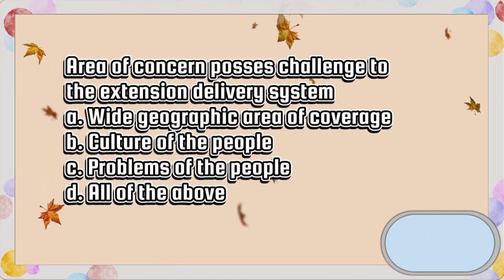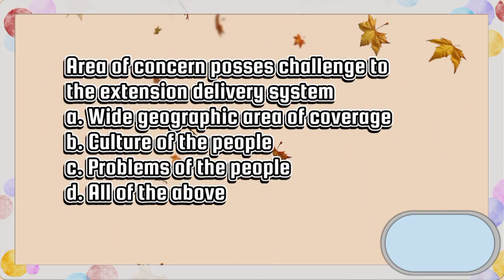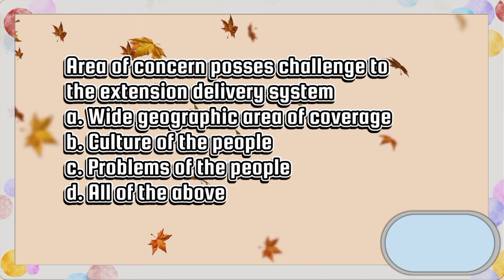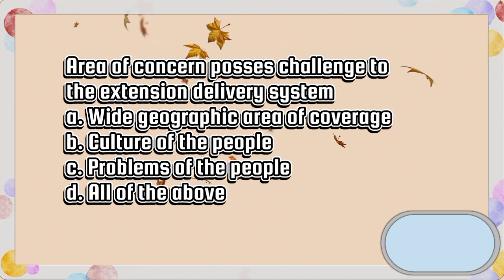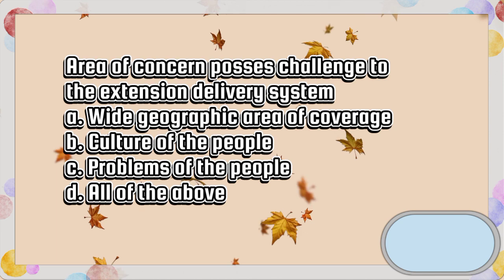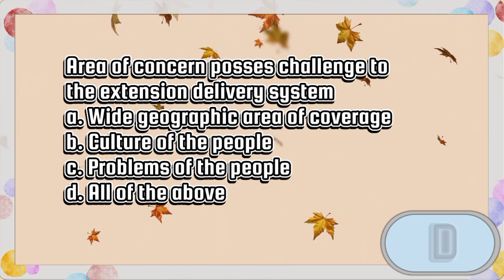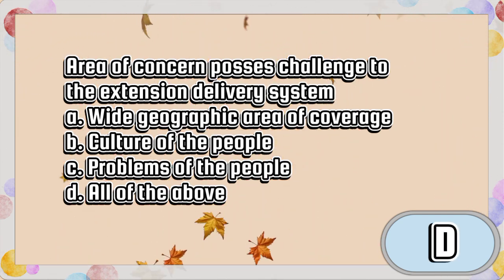Area of concern: Posse's challenge to the extension delivery system. A. Wide geographic area of coverage. B. Culture of the people. C. Problems of the people. D. All of the above. The answer is letter D.